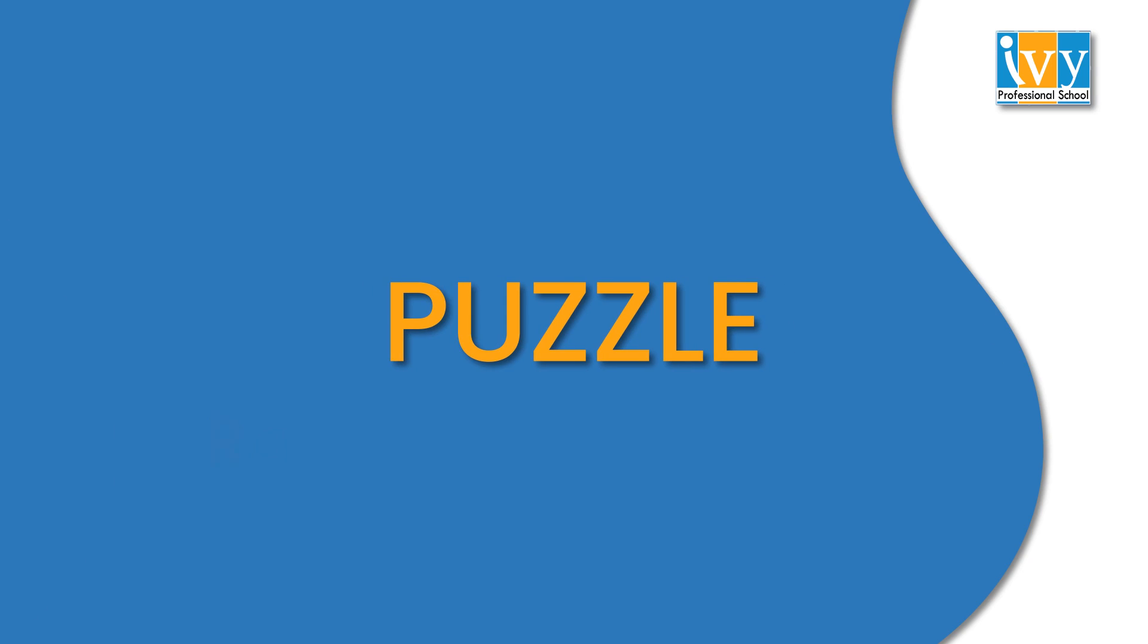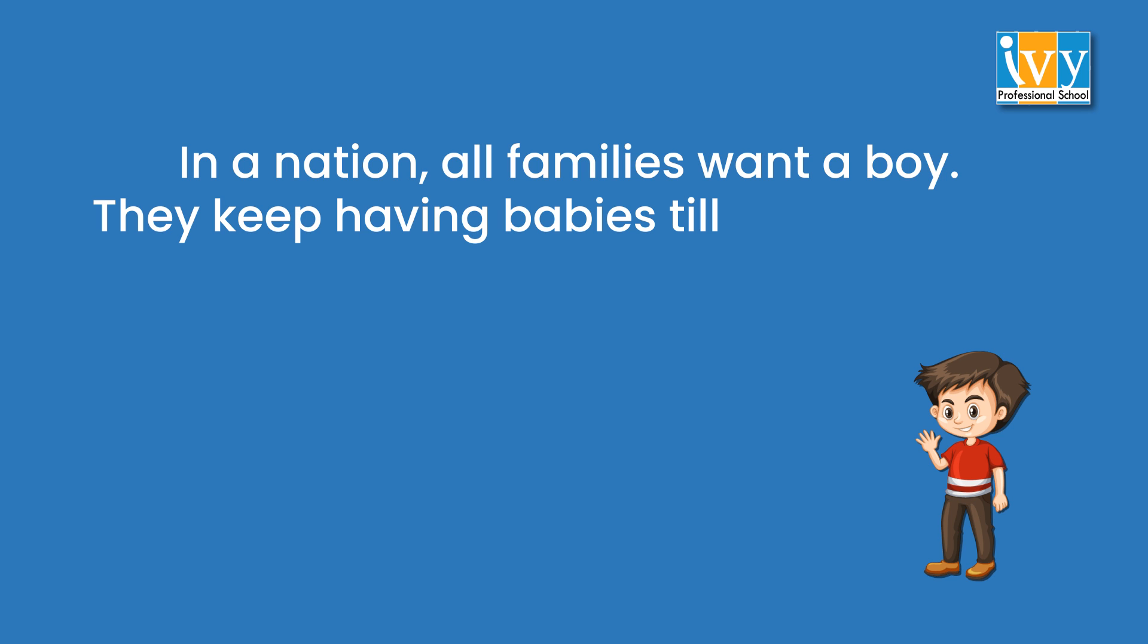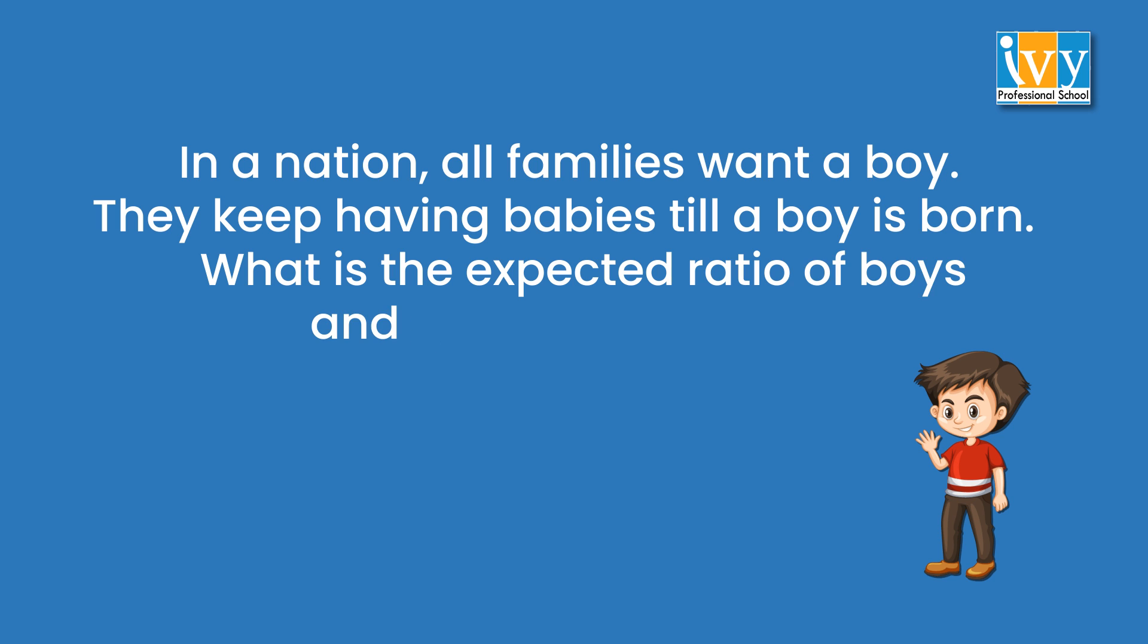Hello everyone, today we are going to understand a probability related puzzle. Come, let's solve this puzzle together. In a nation, all families want a boy. They keep on having babies till a baby boy is born. What is the expected ratio of boys and girls in that nation? Let's pause and think as to how we can solve this problem.